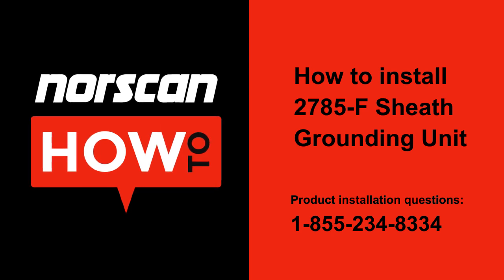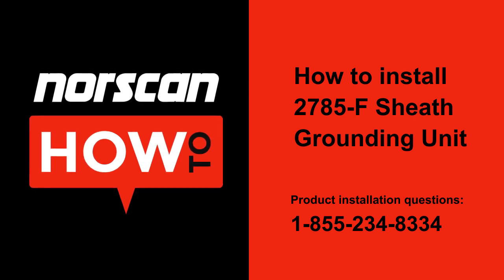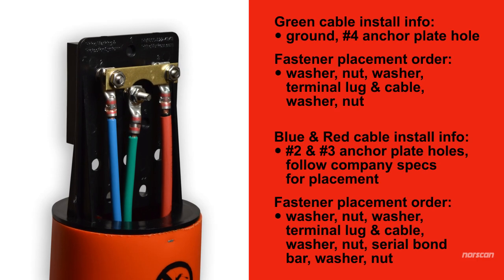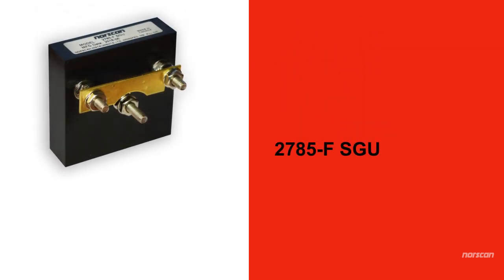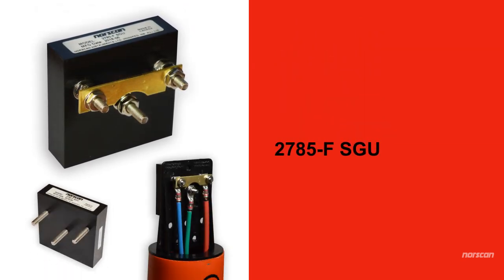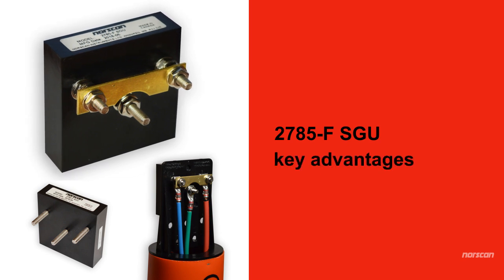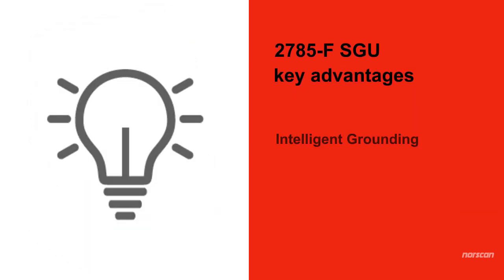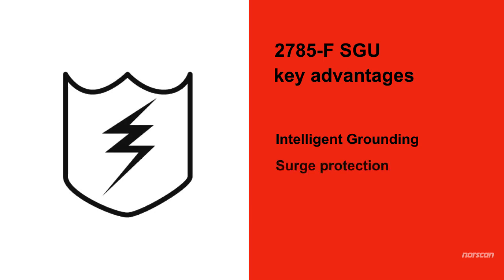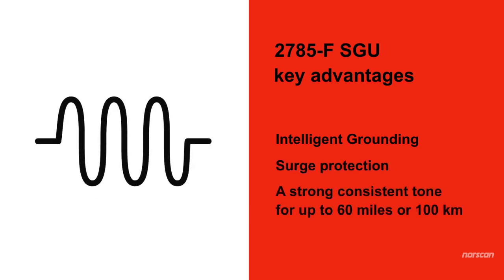How to install Norscan's 2785F Sheath Grounding Unit. Installing Norscan's durable and reliable 2785F SGU will provide three key advantages to your fiber optic cable locating: Intelligent Grounding, Surge Protection, and a strong consistent tone for up to 60 miles or 100 kilometers.